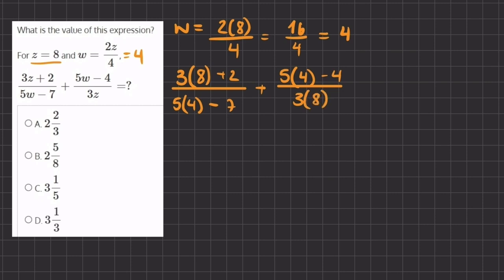Now let's solve. 3 times 8 gives us 24, plus 2 which gives us 26. Then we have 5 times 4 which is 20, minus 7 which gives us 13. Plus our second fraction, 5 times 4 gives us 20, minus 4 that will give us 16, divided by 3 times 8 which will give us 24.